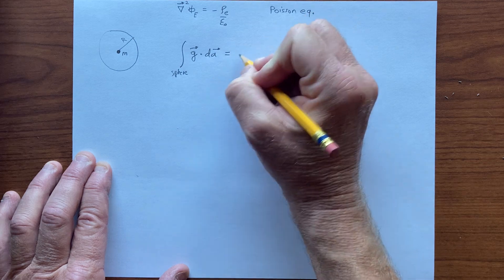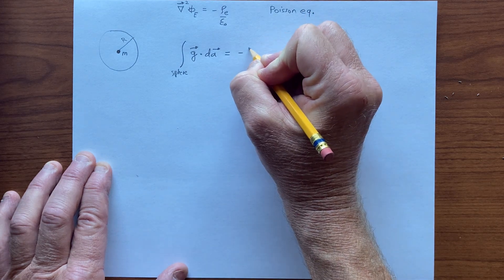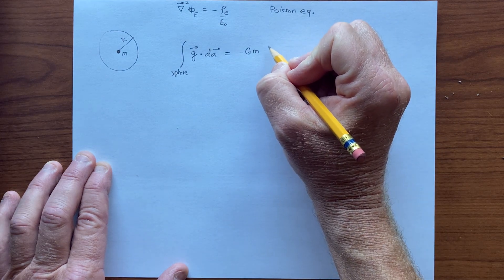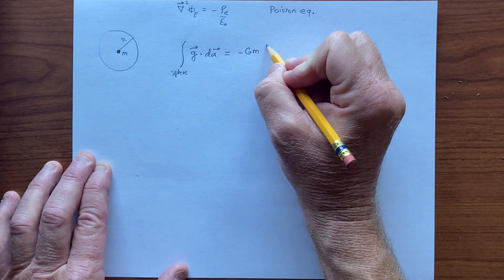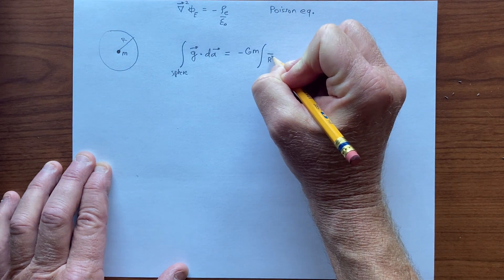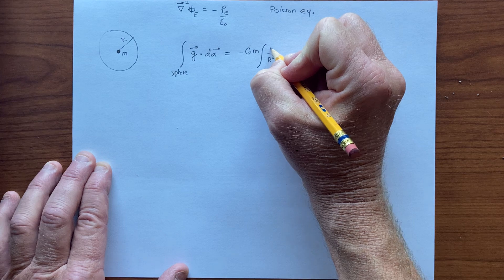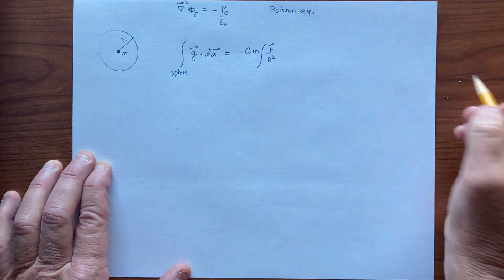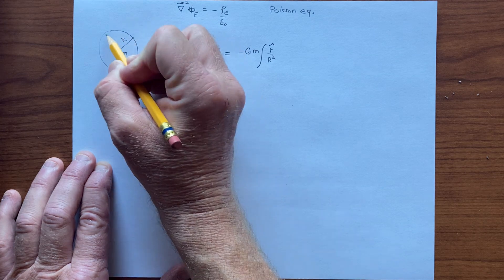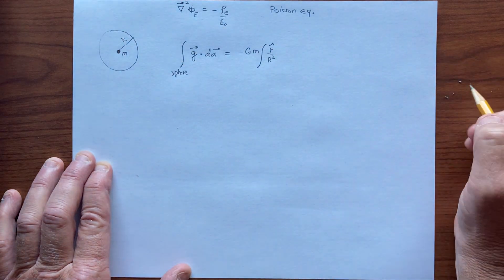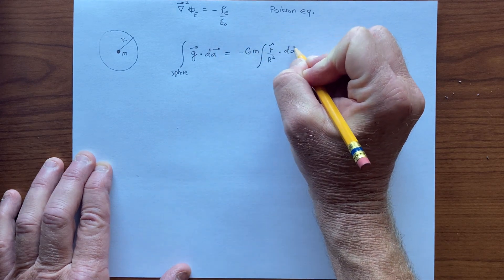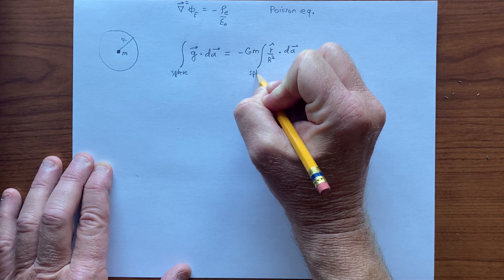And this is, so we have minus g, we have the mass, we divide it by the distance squared, which is actually a constant r squared, and there's a unit vector. gm over r squared, pointing at every point radially outward. So there's the r hat, and we're dotting that with the surface element, and we're integrating over the sphere.